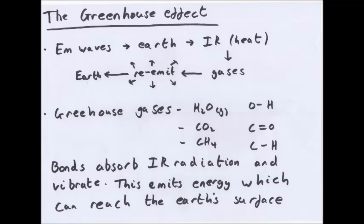Electromagnetic waves from the sun reach the earth where they're absorbed, heating the earth. Then some are re-emitted as infrared radiation heat. They come into contact with gases which absorb them and re-emit them in all directions, often bouncing back at the earth, which heats it further.